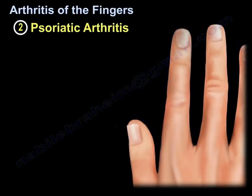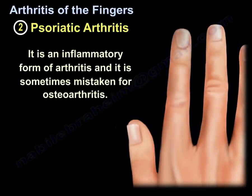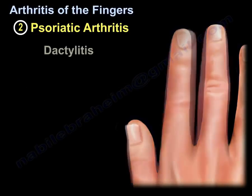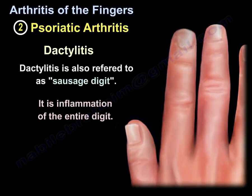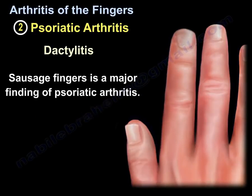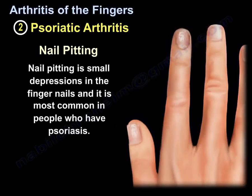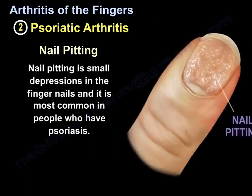Psoriatic arthritis is an inflammatory form of arthritis, and sometimes it may be mistaken for osteoarthritis. Psoriatic arthritis will include dactylitis, referred to as a sausage digit — inflammation of the entire digit — which is a major finding of psoriatic arthritis. Nail pitting, which is small depressions in the fingernails, is most common in people who have psoriasis.